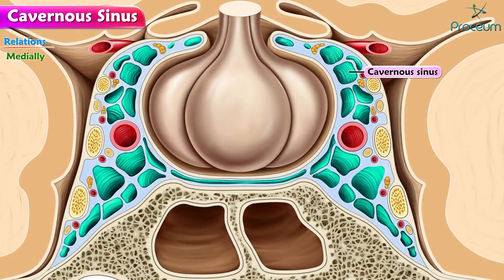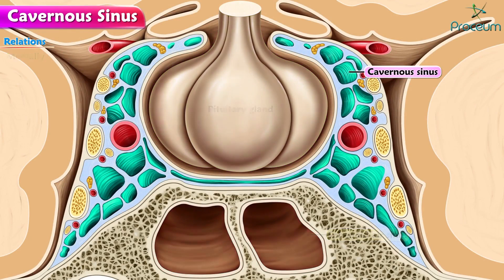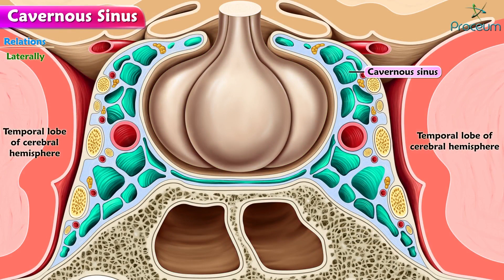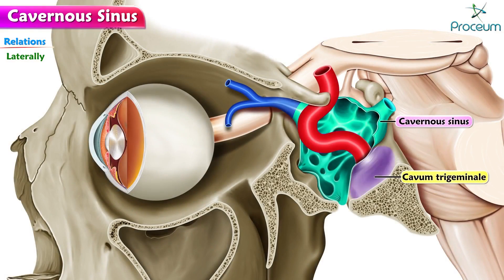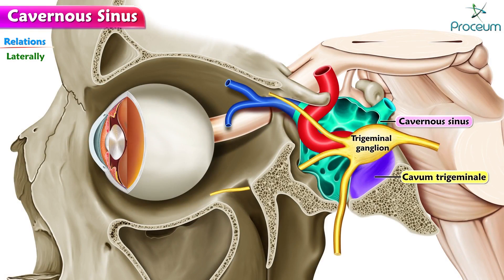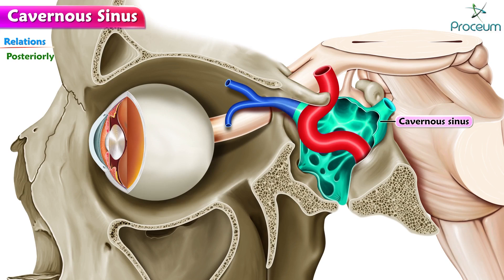Medially, the structures present are the pituitary gland and the sphenoid air sinus. Laterally are the temporal lobe of the cerebral hemisphere and cavum trigeminale containing the trigeminal ganglion. Anteriorly are the superior orbital fissure and apex of the orbit. Posteriorly are the crus cerebri of the midbrain and the apex of the petrous part of the temporal bone.